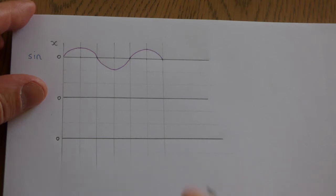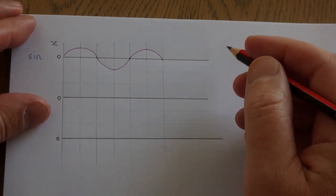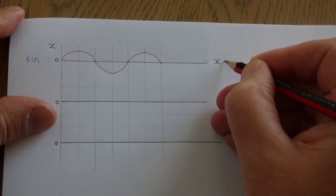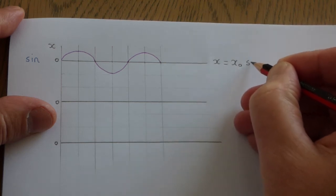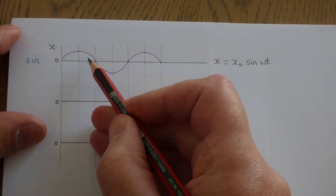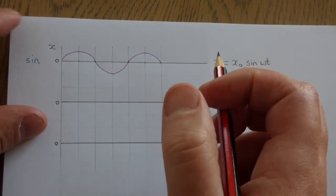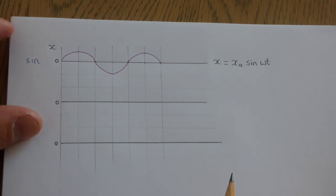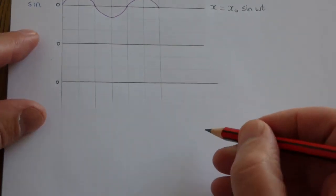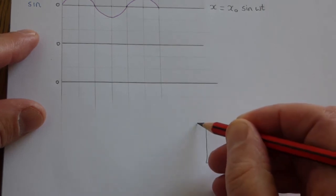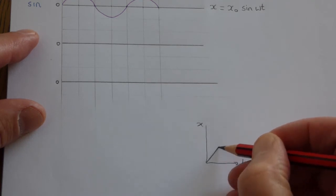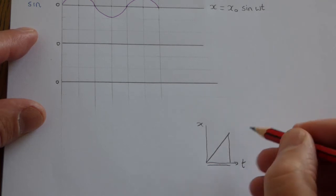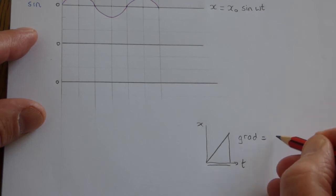We're going to go back to the original equation for how far up or down an object was: x = x₀ sin(ωt), a perfect sine curve. We're now going to ask a simple question — if we measured the gradient of this graph at any point, what would that gradient represent? From GCSE, we know that the gradient of a displacement-time graph equals change in displacement divided by time, which is the velocity.